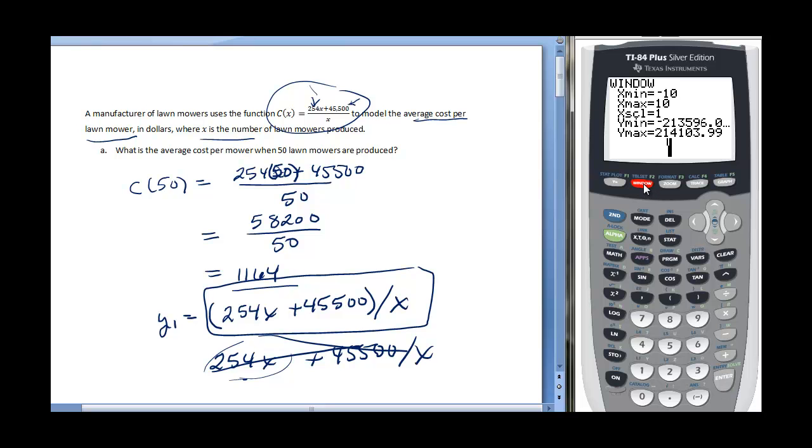If I go to my window and see what it selected, it went from negative 10 to 10. I might want to go negative 10 to maybe 100. That would be 100 lawn mowers that I'm going to make. Maybe I'd like to see my axis, so I might go negative 100 and might go up to 5,000 here.